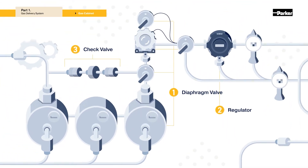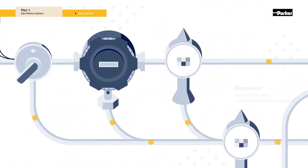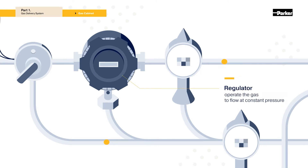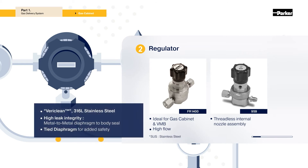The regulator is a component that operates to ensure the gas flows at a constant pressure. It is classified by the pressure range and flow rate of the gas being drawn in. The regulators used in the gas cabinet are the FR1400 for high flow and pressure, and the 959 for standard flow.